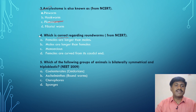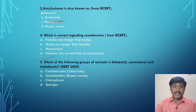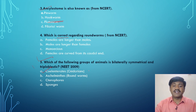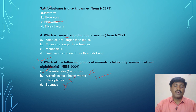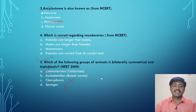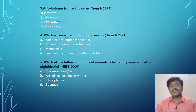Next question: which group of animals is bilaterally symmetrical and triploblastic? Cnidarians are generally diploblastic — not triploblastic. Aschelminthes are triploblastic — we know that. Ctenophores are also diploblastic. Sponges have no distinct ectoderm or endoderm. Therefore, the only animals showing both triploblastic organization and bilateral symmetry are Aschelminthes. So the correct answer is Aschelminthes.